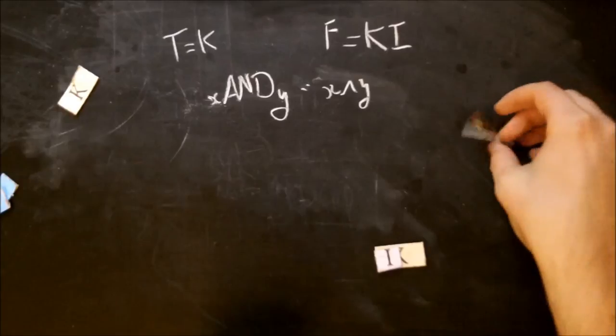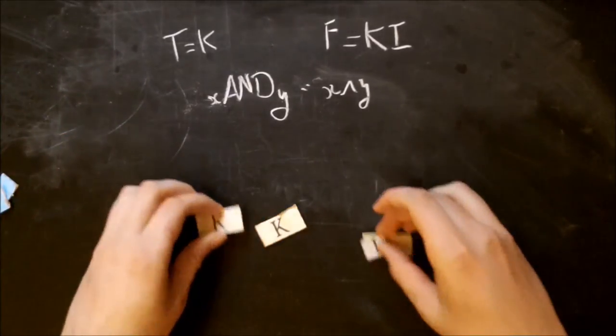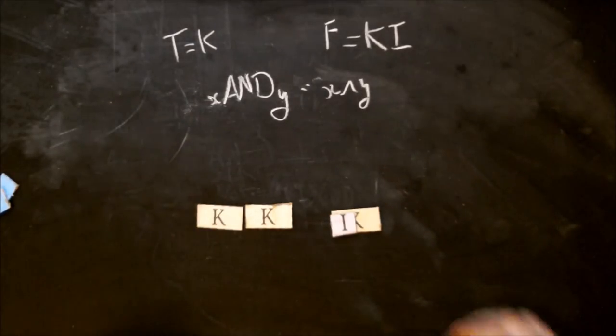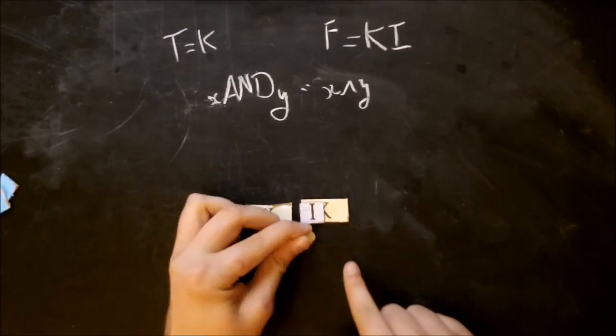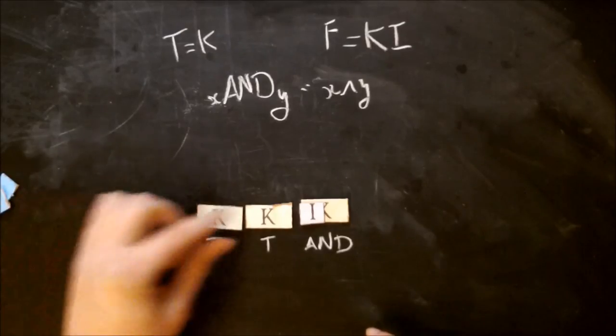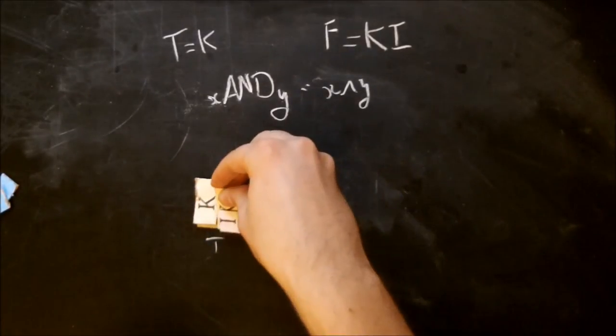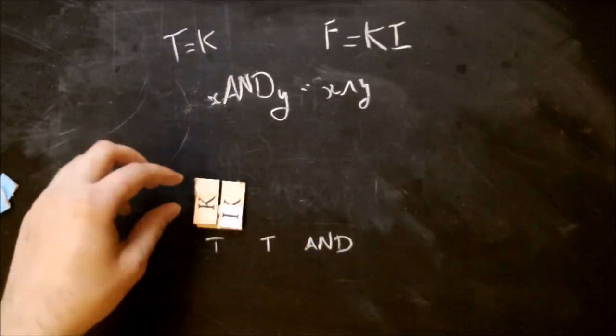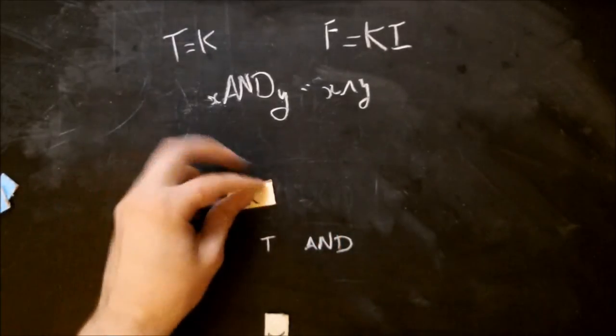So how does that apply? That's applying postfix. So if I have true and true, that means I write that, I go true, true, and. So here's my and. Let's see. Okay. So k goes there. My and goes here, and I end up with true. Okay.